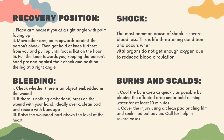How to do the recovery position. First, place the arm nearest you at a right angle with palm facing up. Next, move the other arm palm upward against the person's cheek. Then get hold of the knee farthest from you and pull up until the foot is flat on the floor. Next, pull the knee towards you, keeping the person's hand pressed against their cheek and position the leg at a right angle.